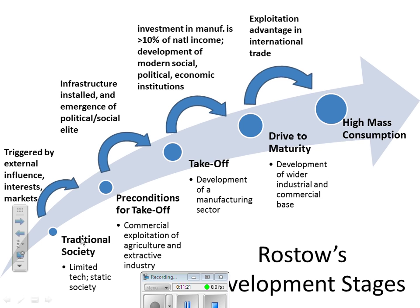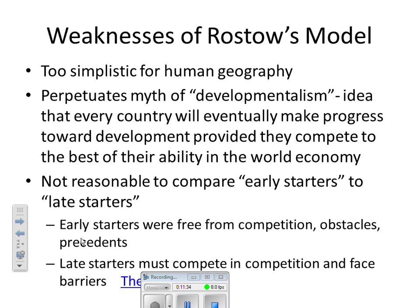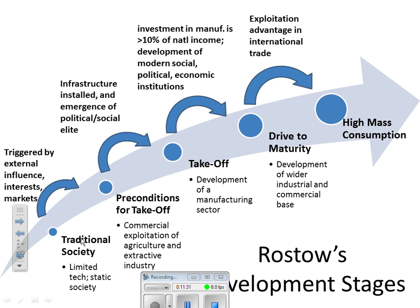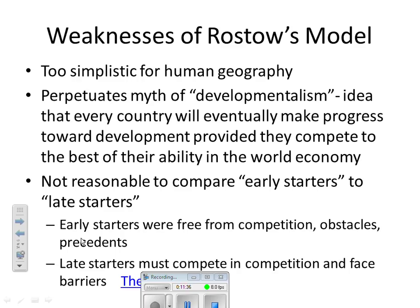So if you take a look at this whole idea, you really are going from a traditional society to that high mass consumption society, and it usually does not take very long. However, there are certainly some weaknesses, and your book will go into this. First of all, it's too simplistic for human geography. It really perpetuates the idea that every country in the world will eventually be able to make progress from being an LDC to an MDC if they are able to compete to the best of their ability in the world economy — basically the idea that if you try really hard, you'll become developed. Unfortunately, that's not the case.